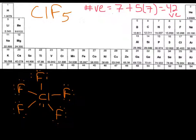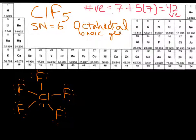So now, what is the steric number for chlorine pentafluoride? So 1, 2, 3, 4, 5, 6. Okay, so that gives us an octahedral basic geometry.